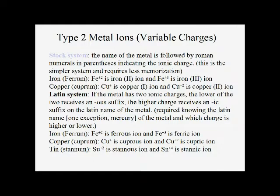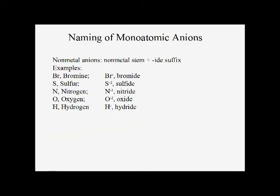So we're going to have to be able to use the stock system and be familiar with the Latin system. For anions — monoatomic anions — these are going to be nonmetals with a negative charge. We're going to take the name of the nonmetal and change the suffix to an IDE suffix. So bromine becomes bromide, sulfur becomes sulfide, nitrogen is nitride, oxygen is oxide, hydrogen is hydride, iodine is iodide, and fluorine is fluoride.